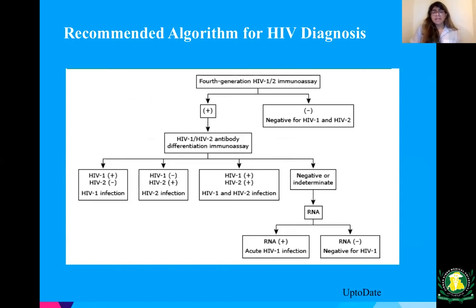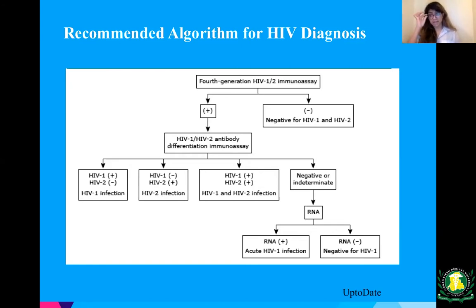This is the recommended algorithm for HIV diagnosis — you will likely see this on your Step exams. This is what's used in the United States. We use the fourth-generation HIV-1/2 immunoassay. If positive, the test further differentiates into HIV-1 or HIV-2 antibody. If HIV-1 is positive, you have an HIV-1 infection; if HIV-2 is positive, an HIV-2 infection; if both are positive, a mixed HIV-1 and HIV-2 infection.